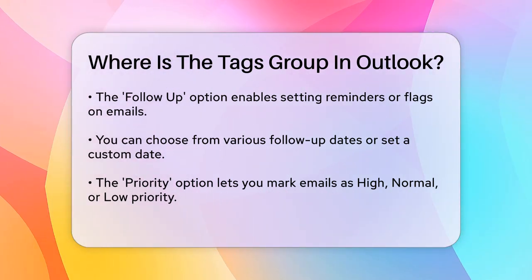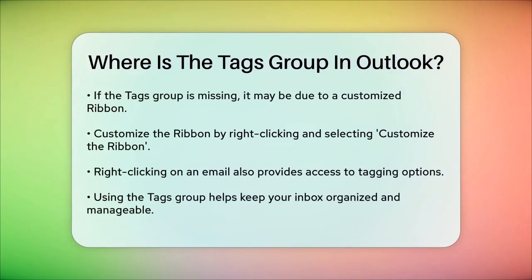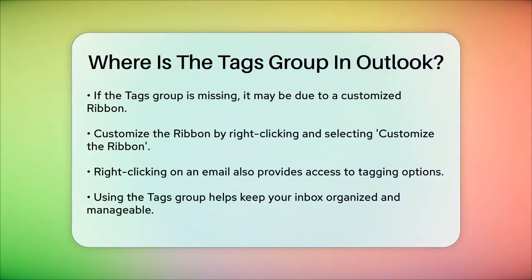Another way to access these tagging features is by right-clicking on an email in your inbox. When you do this, you'll see a context menu that includes options like Categorize, Follow-up, and Set Priority.